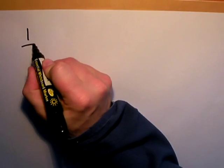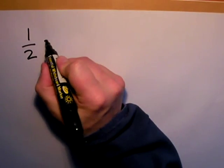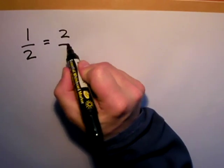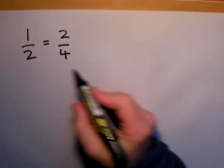I'm going to talk about equivalent fractions. The first fraction I want to look at is a half, simply a half. I know that a half is equal to two quarters, and you can see there's a pattern there.